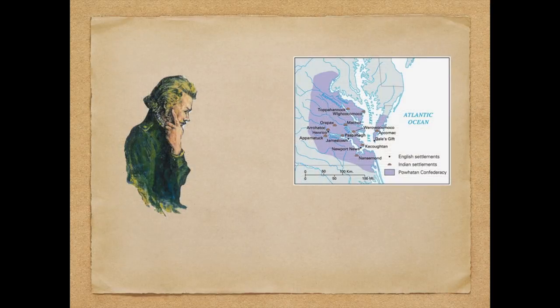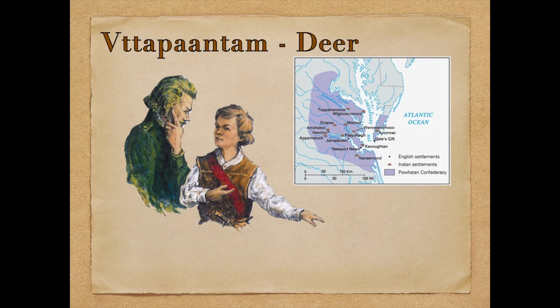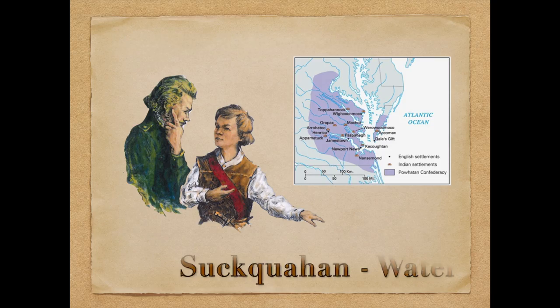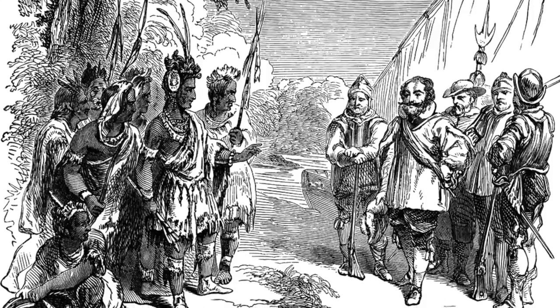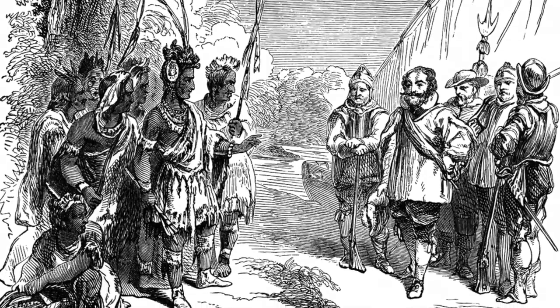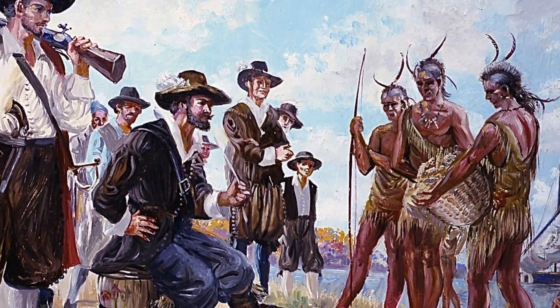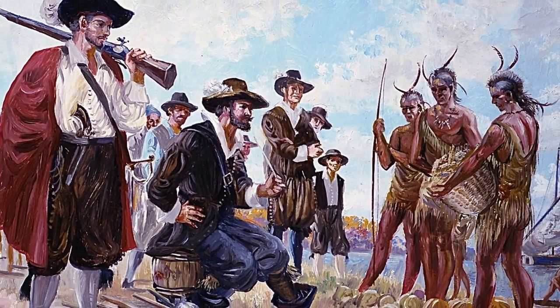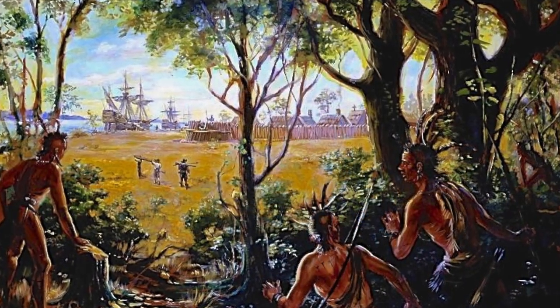It was believed that young boys, like Thomas Savage, could absorb languages and overcome cultural and political barriers in a way that grown men could not. Why not offer Chief Wahoon Sunaqua the English boy Thomas Savage in exchange for a Powhatan boy who would sail to England? The motive would be to promote understanding, assist with trade during times of peace, and serve as spies in times of war.